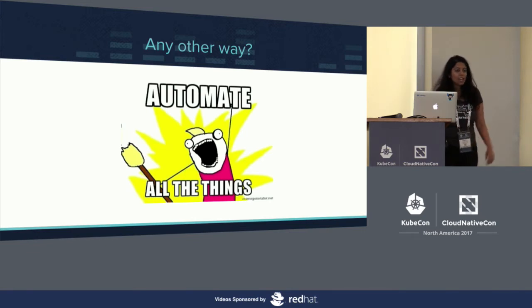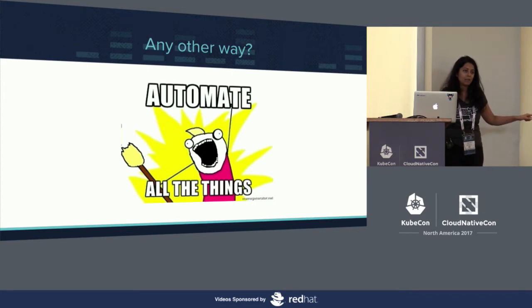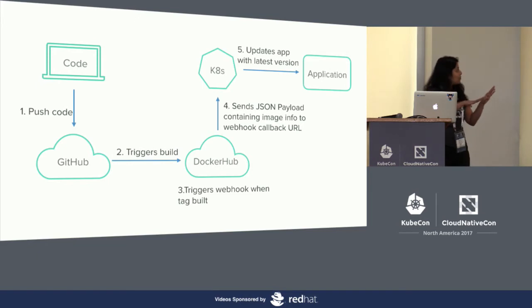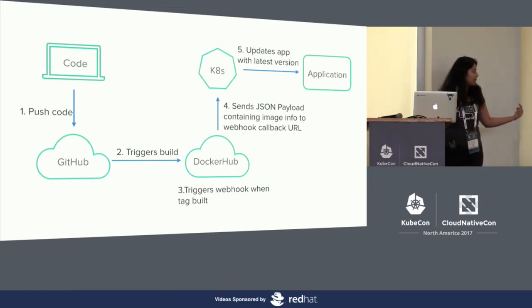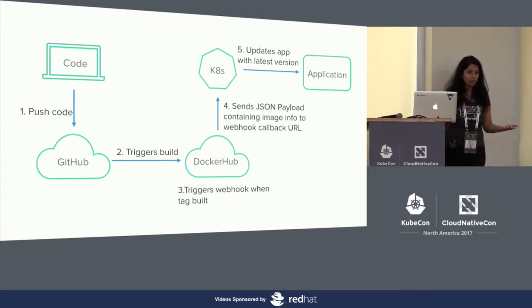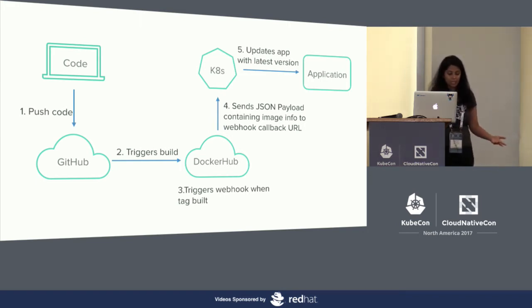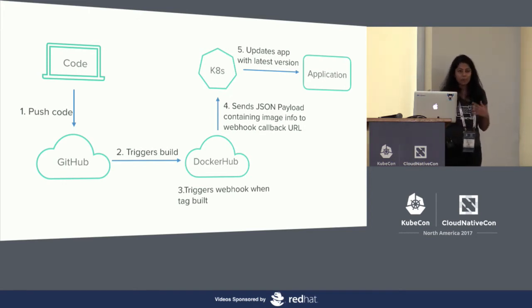So let's automate it. The webhook receiver code that I spoke about earlier will be used to automate this process as well. The image registry I'm using is Docker Hub because Docker Hub has the automated builds feature, meaning I can integrate it with any of my code repositories. When some code is pushed, it will trigger the build of a new image tag. Docker Hub also has the webhooks feature that is needed for our webhook receiver code.